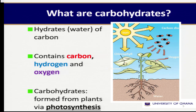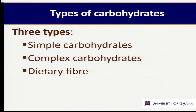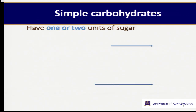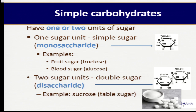When we talk of carbohydrates, basically we are getting them from our plant food source. And there are three types of carbohydrates: we have the simple carbohydrates, complex carbohydrates, and then the dietary fiber. So we classify them into three — simple carbohydrates, complex carbohydrates, and then dietary fiber.